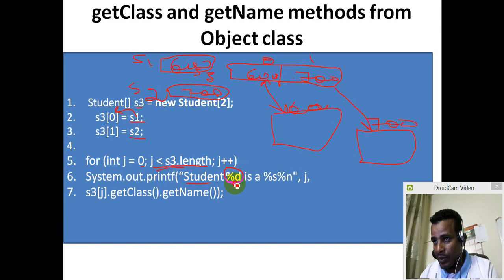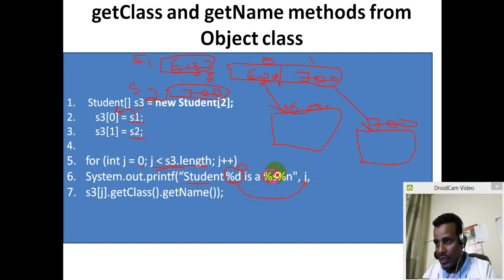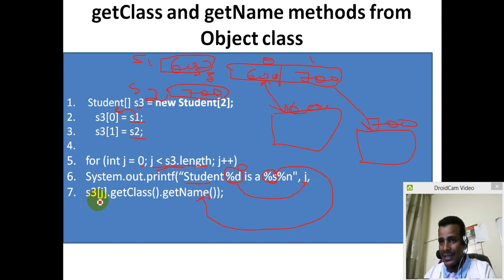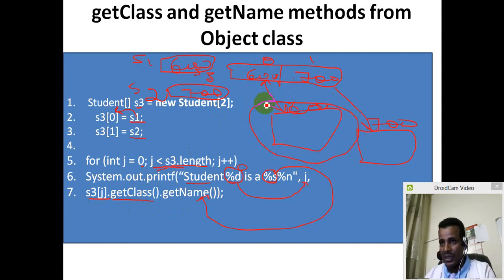What is placeholder? It is placeholder. JSON is 0. Student is 0. Is a placeholder. What is placeholder? String. String is class name. This is S3 of J. This is dot getClass. This is class.